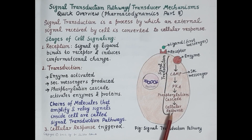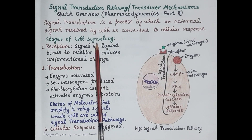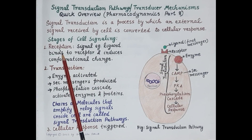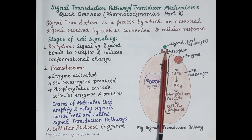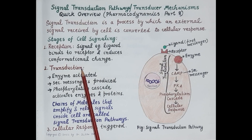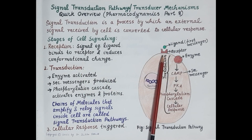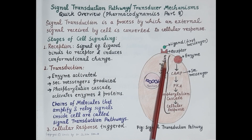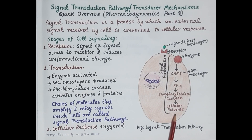Signal transduction or cell signaling has three stages. The first stage is the reception of the signal in the form of a ligand. The second is transduction — the process by which the message brought by the signal or ligand is communicated throughout the cell. The third is the cellular response.